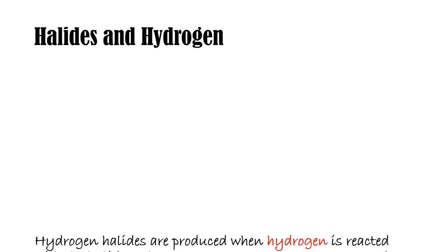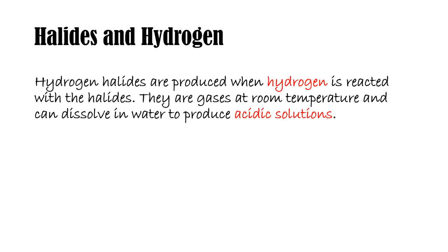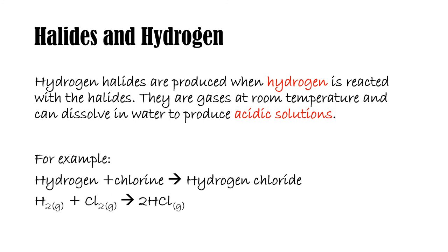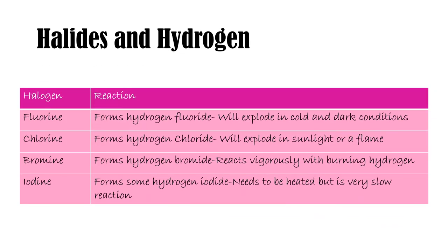Halogens reacting with hydrogen. When you react halogens with hydrogen, you form hydrogen halides, which can have some very violent reactions. At room temperature, these hydrogen halides are gases, but they can also form acidic solutions when dissolved in water. Starting with fluorine: fluorine forms hydrogen fluoride, which will explode in cold and dark conditions. Chlorine forms hydrogen chloride, which explodes in sunlight or in the presence of a flame. Bromine forms hydrogen bromide, which reacts vigorously with burning hydrogen. And iodine forms hydrogen iodide, but this needs to be heated and the reaction still remains very slow.